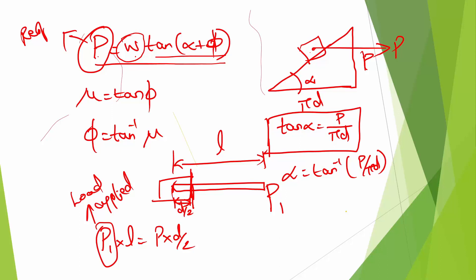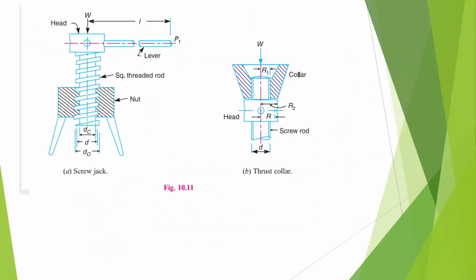P × L = P × (D/2) is the basic formula which should be known. This is the applied force. When we rotate the lever, the screw jack rotates and moves upward during rotation.